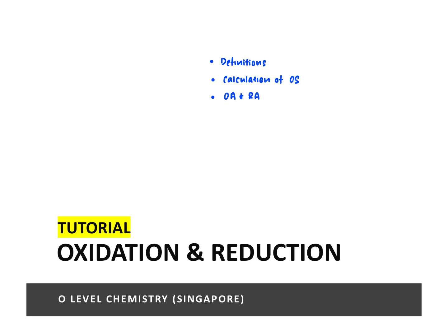Next, we need to learn how to calculate the oxidation states of atoms in different substances. And lastly, we need to know what oxidizing and reducing agents are, and to know an example as well as the color change of an oxidizing agent and a reducing agent.